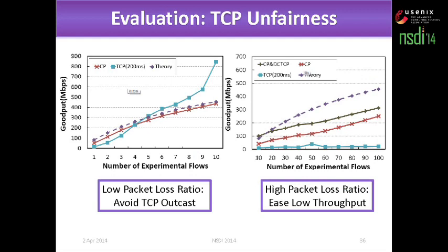Then we evaluate TCP unfairness. We can see that in low packet loss ratios, the results are quite similar to the theoretical value. In high packet loss ratios, our solution achieves low throughput improvement but cannot achieve exactly the same as the theoretical value, because using different congestion control mechanisms produces different results. The congestion control mechanism affects fairness, but we can handle this problem.